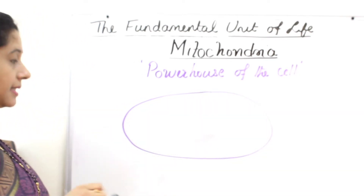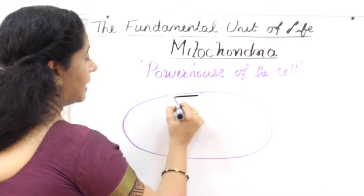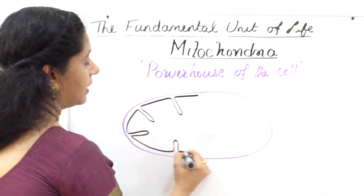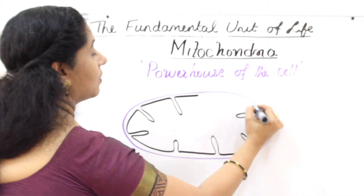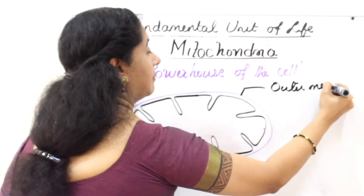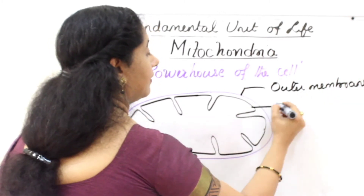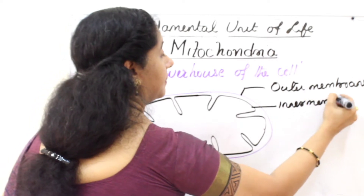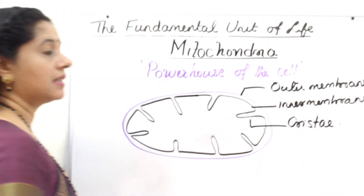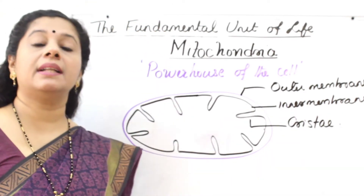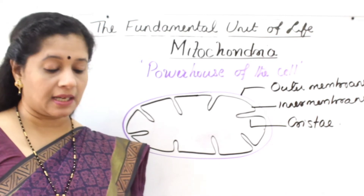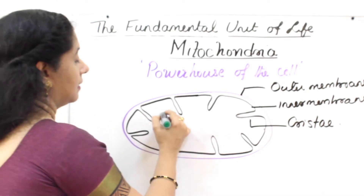It has a double membrane system. The outer membrane is a porous membrane, and the inner membrane is folded. These foldings are called cristae. The outer membrane is porous, and the inner membrane is folded. The foldings actually increase the surface area for the respiratory reactions.